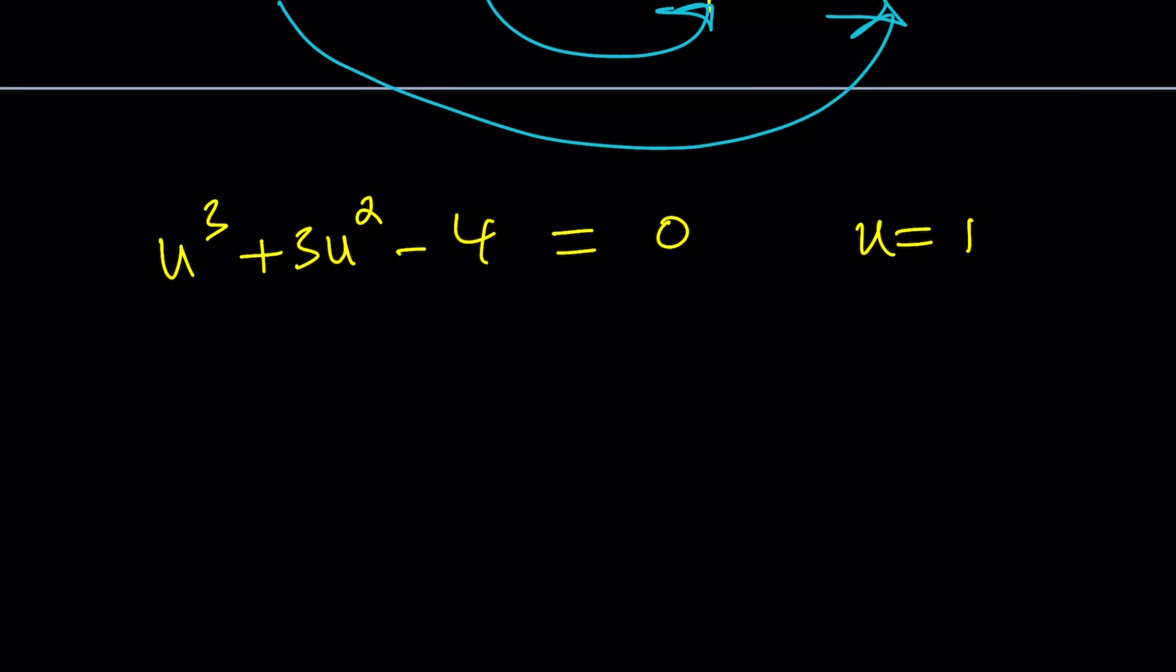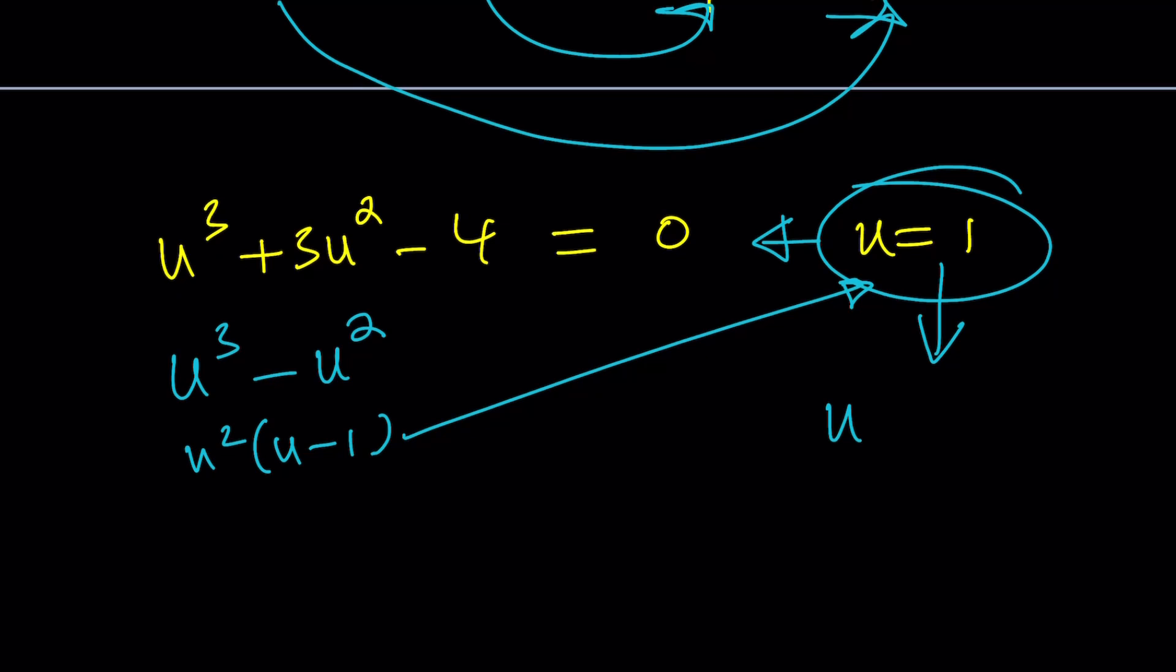u cubed plus 3u squared equals 4. That was our equation, right? Let's make sure we got the right one. Yes. And actually, minus 4 should be on the left-hand side. Here we go. So that's our polynomial, and we do know that u equals 1 is a solution. So knowing that is actually really good in terms of factoring, because now we can use it to manipulate our expression. Here's how we can do it.